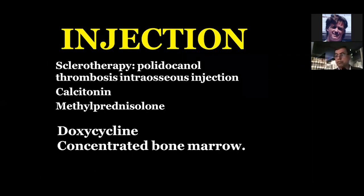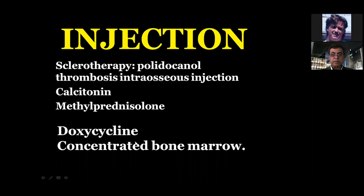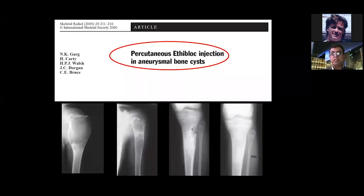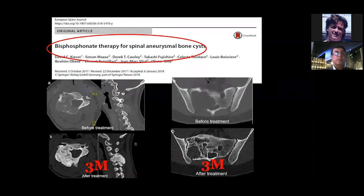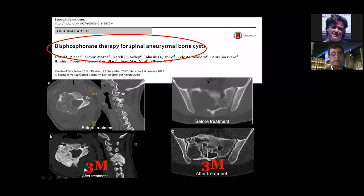Another emerging approach is sclerotherapy — injecting substances inside the lesion such as alcohol, calcitonin, methylprednisolone, doxycycline, and concentrated bone marrow. These have all been tried with various degrees of success. Doxycycline has bone affinity and causes sclerosis. Bisphosphonates have shown solidification at three months.